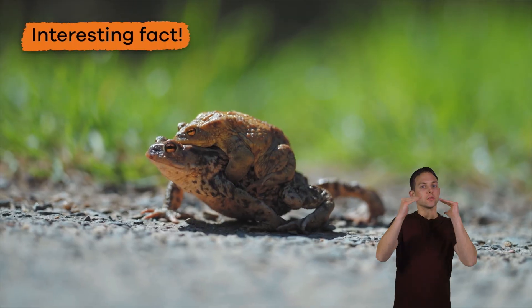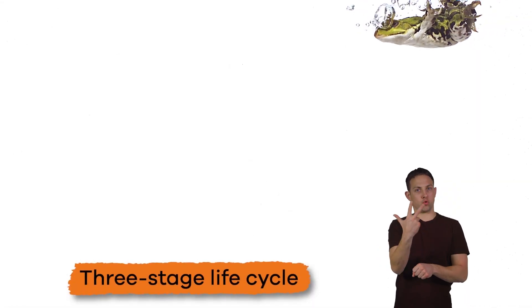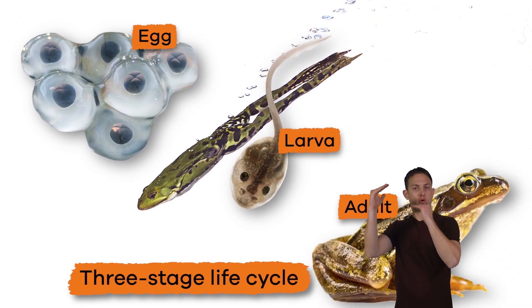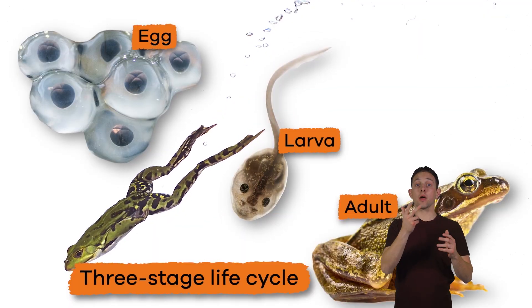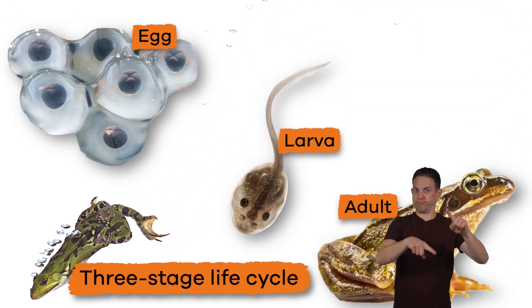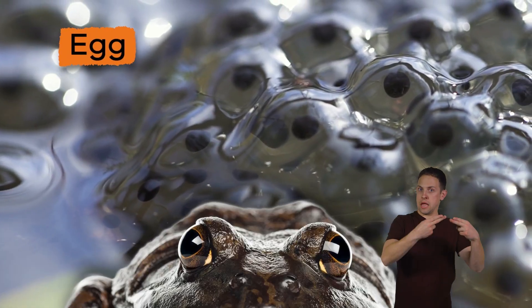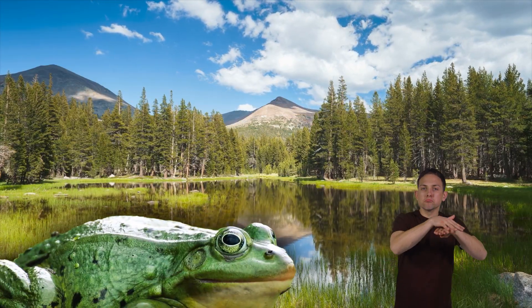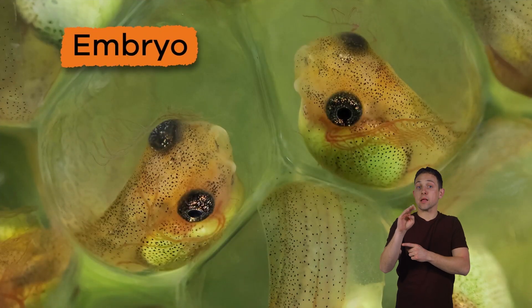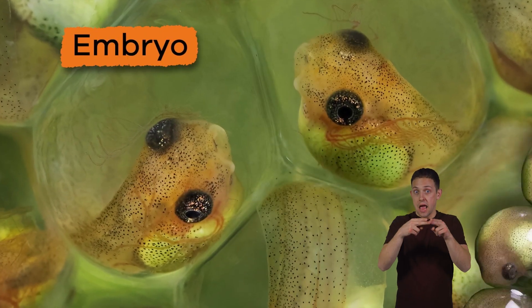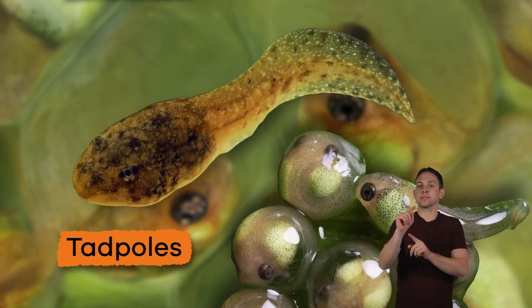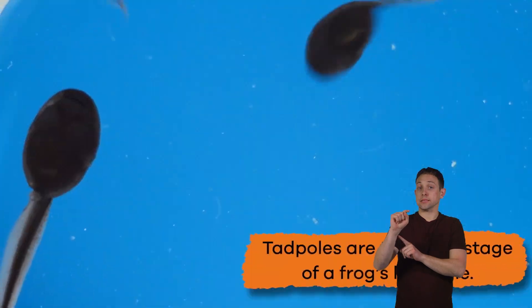Frogs complete a three-stage life cycle: egg, larva, and adult — but take on various forms during these stages. First, frogs start out as eggs. These eggs are laid in bodies of water, usually in the springtime. The embryos, or cells inside the eggs, then develop, and when the eggs hatch they are tadpoles.